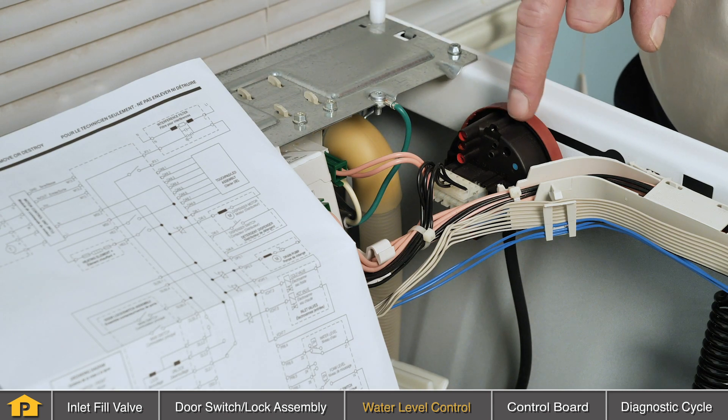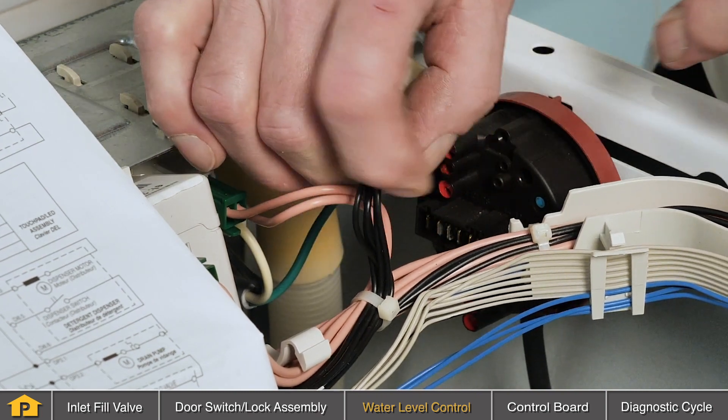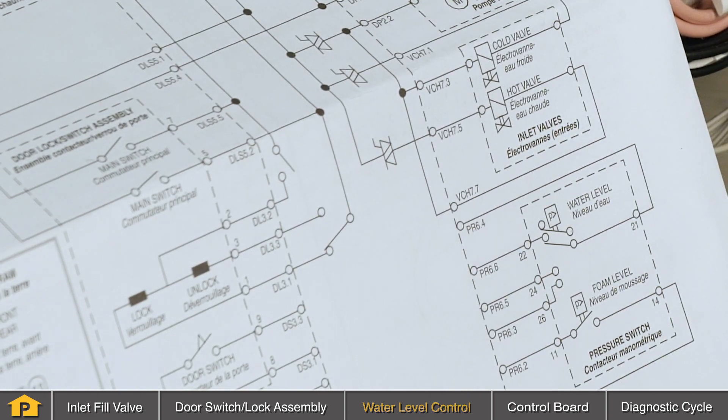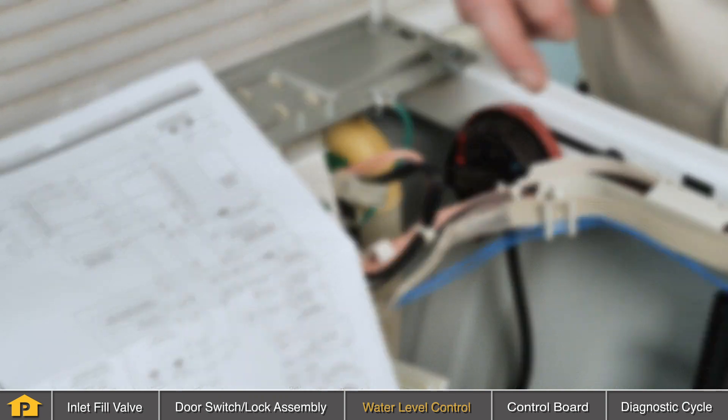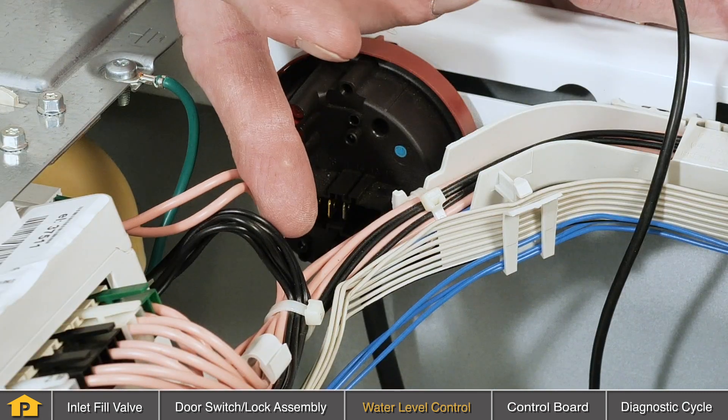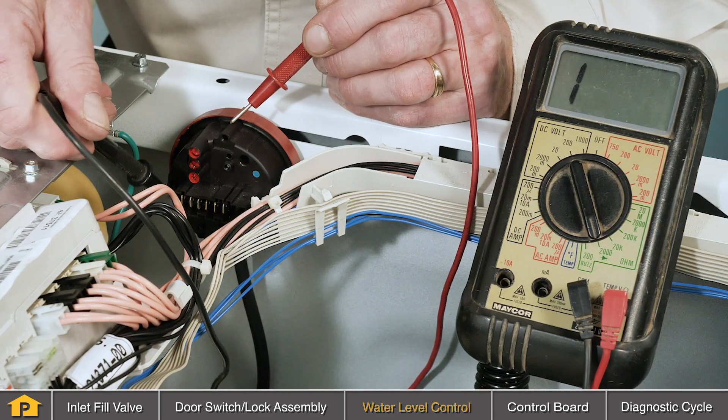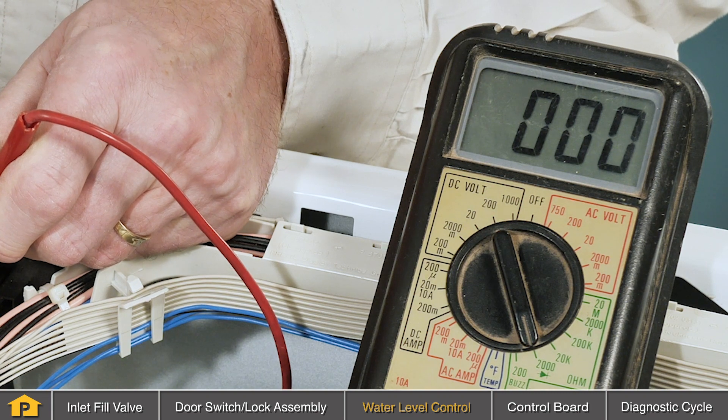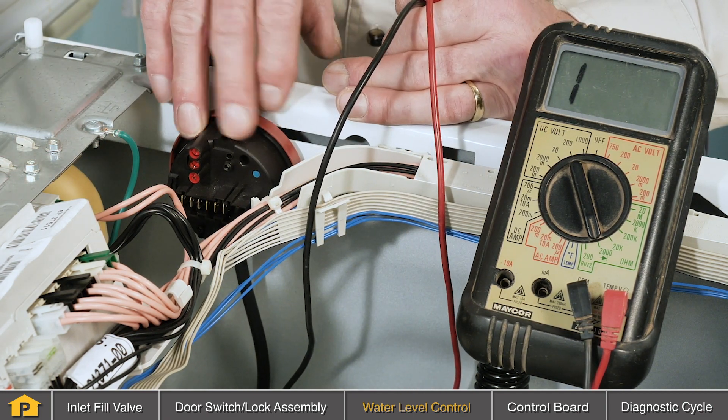With the top removed, we've located the water level control attached to the side of the cabinet. We've released the locking tabs on the wire harness connector. We've also located the wiring diagram for this particular model and have identified the terminal numbers that we need to test on that water level control and those are indicated across the top of that control so we know which terminals we need to test. When testing that water level control, we first want to make sure that there is no water in the tub. We've removed the harness connector and identified the two terminals that we need to test. This particular model is the one closest to the left side and the third one in. Our meter indicates that we do have continuity which means that the switch contacts are making contact properly so we've eliminated the water level control as being a source of our problem.